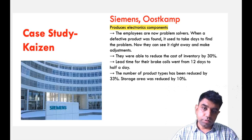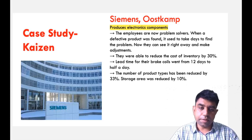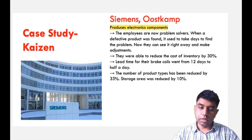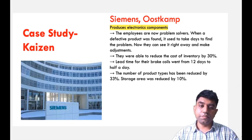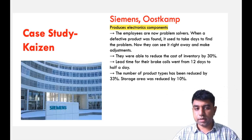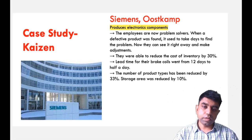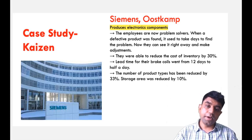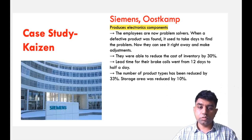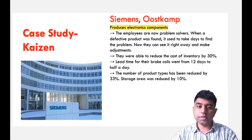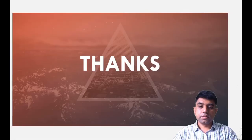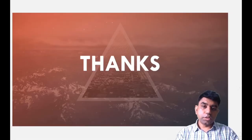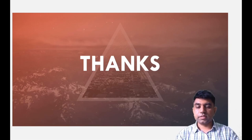Whatever end result you require, try to go for small change. This is applicable even to your personal results. If you are scoring 80%, you cannot directly think about 95% — have a small target, and at the end of the examination you may score well. Try to have small, small improvements in each and every stage of life. That is nothing but Kaizen. Still more tools to discuss, but that will be covered in the next class. Thank you.